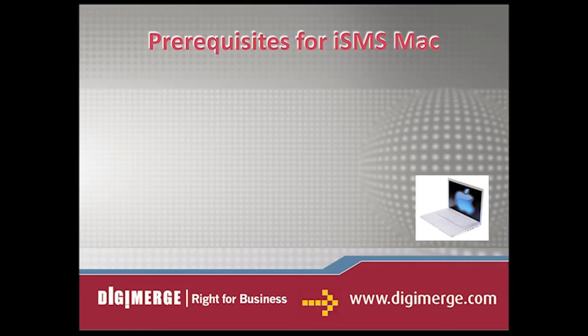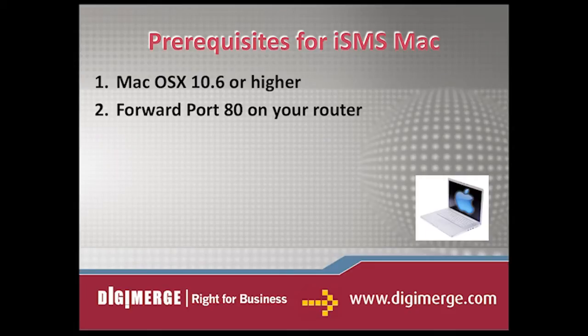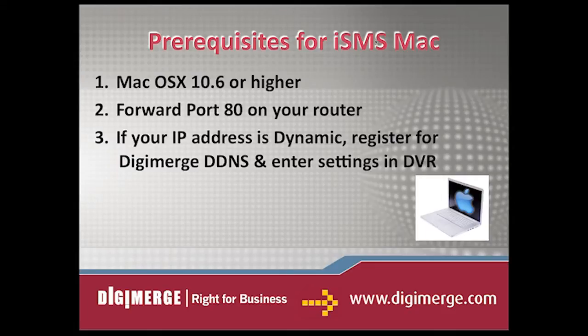Before obtaining the Mac app, please note the following prerequisites that are necessary in order for it to work. Firstly, your Mac system must be OSX 10.6 or greater using an Intel processor. Port 80, or whichever port your system is using, must be port forwarded on your router. If you have a dynamic IP address, you must create a free and secure DigiMerge DDNS account and have the DDNS settings configured in your DVR. Lastly, the DVR must have internet access.